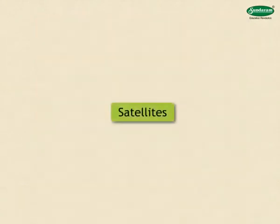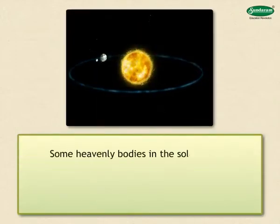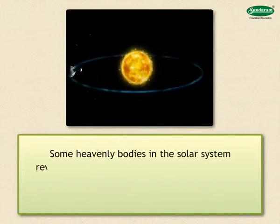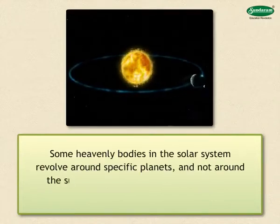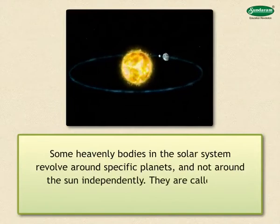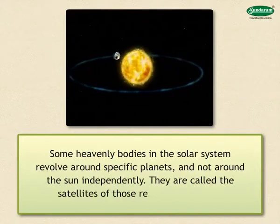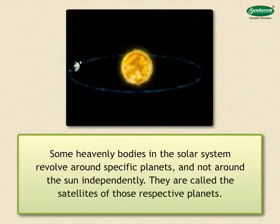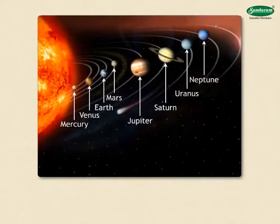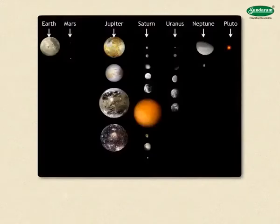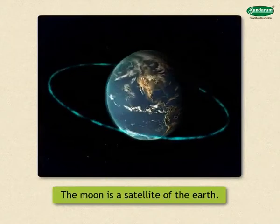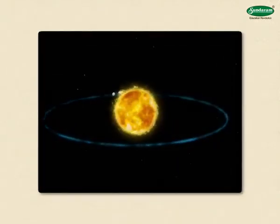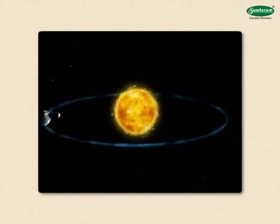Now let us study about satellites. Some heavenly bodies in the solar system revolve around specific planets and not around the sun independently. They are called the satellites of those respective planets. Most of the planets in the solar system have satellites. The moon is a satellite of the Earth. Planets revolve around the sun along with their satellites.